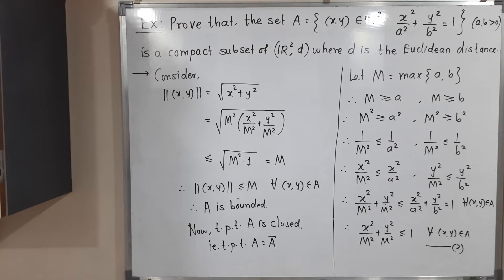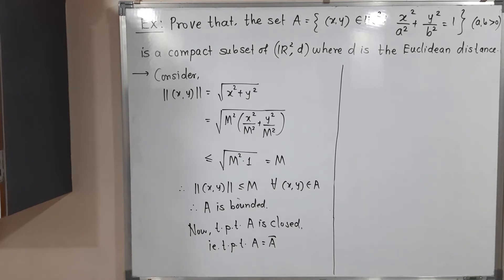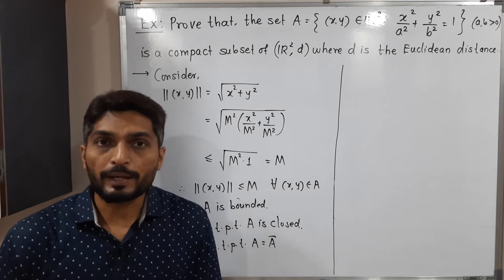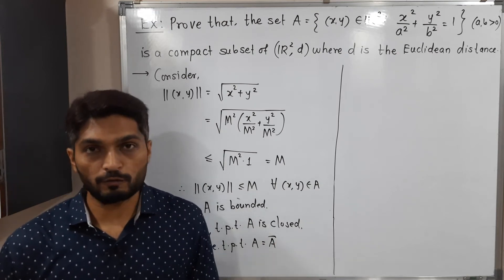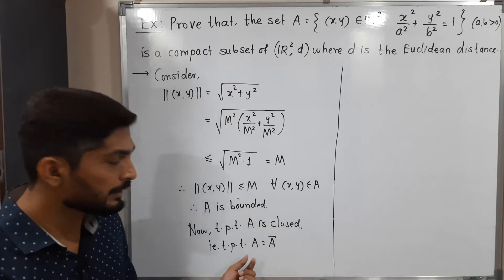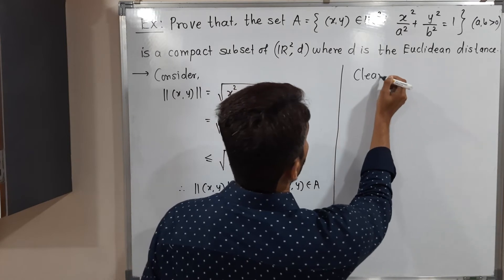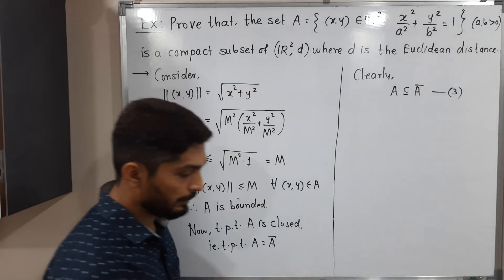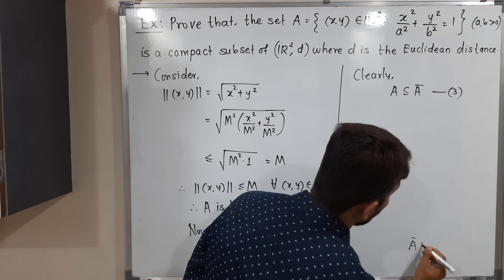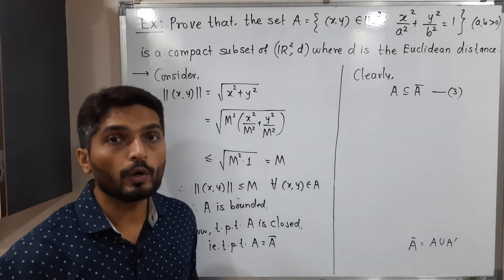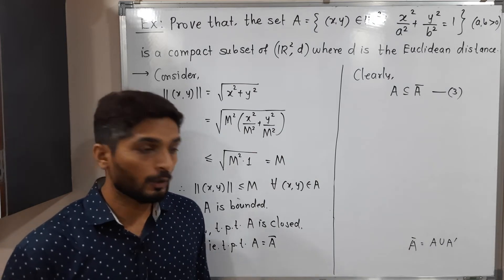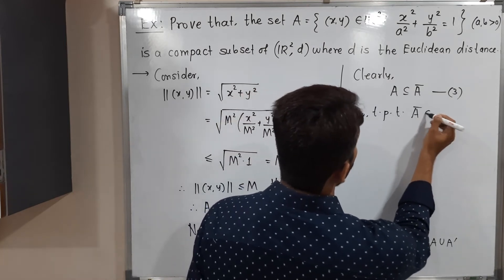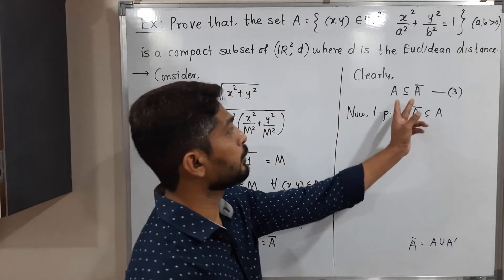To prove A = Ā, we prove each set is a subset of the other. First, A ⊆ Ā — call this (3) — since by definition Ā = A ∪ A', so A is already included in the definition of Ā. Now we need to prove that Ā ⊆ A, and then both are equal.